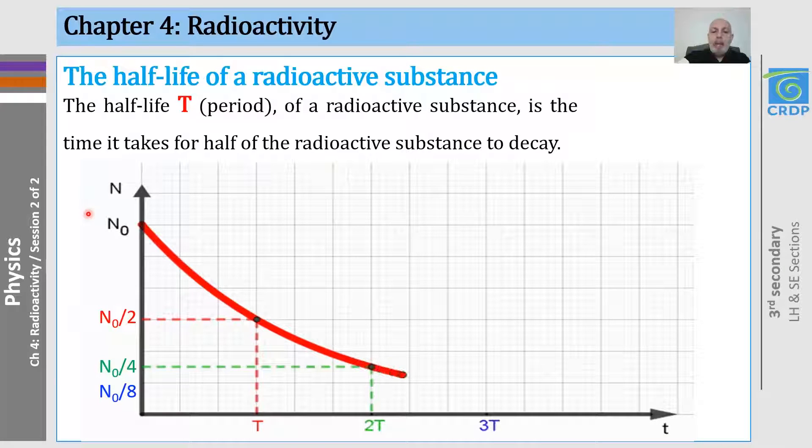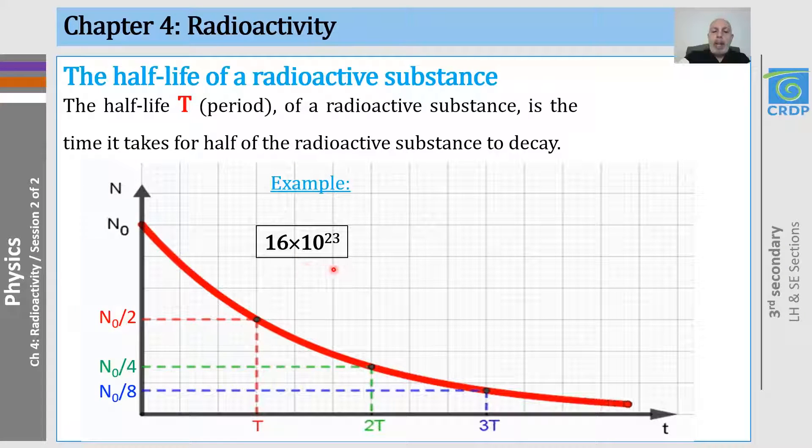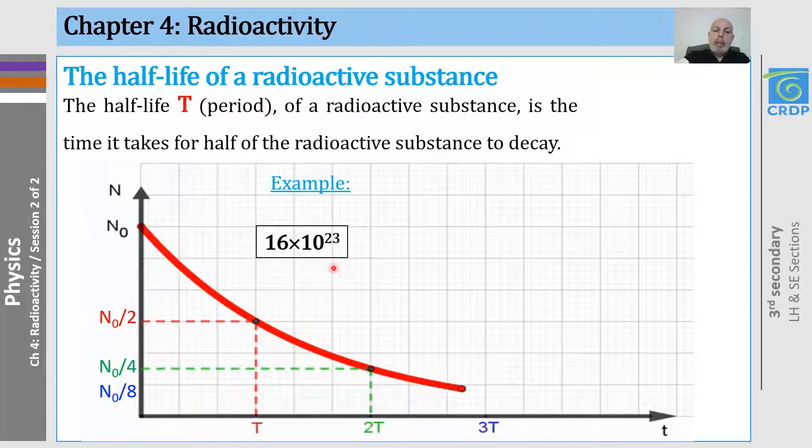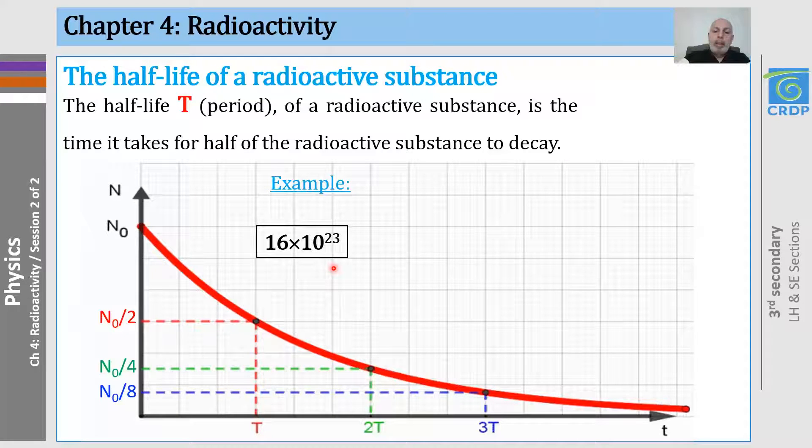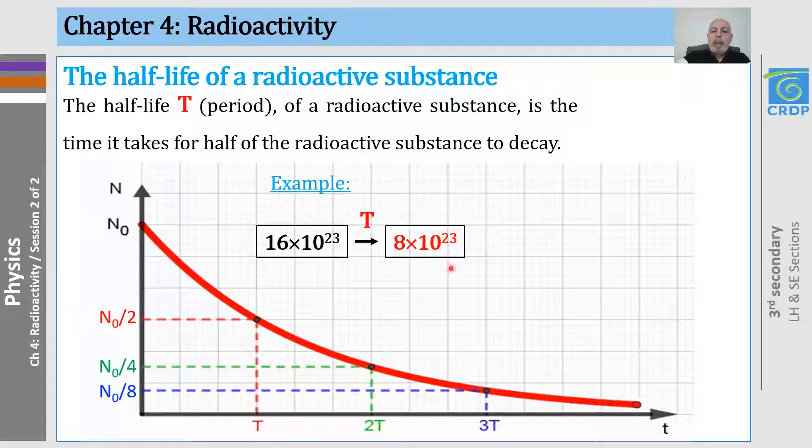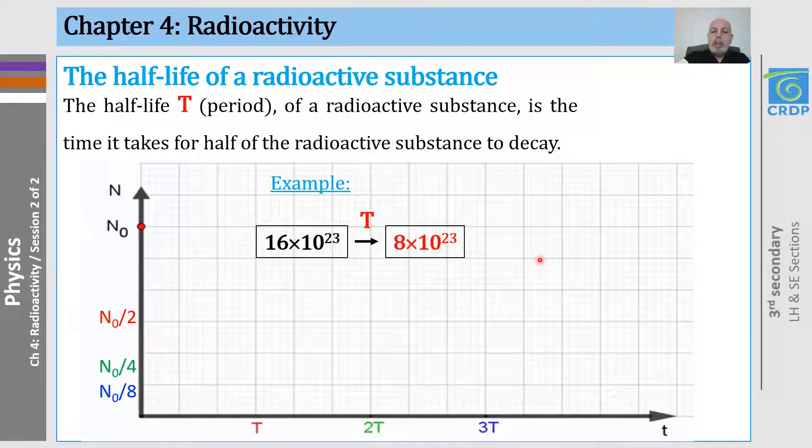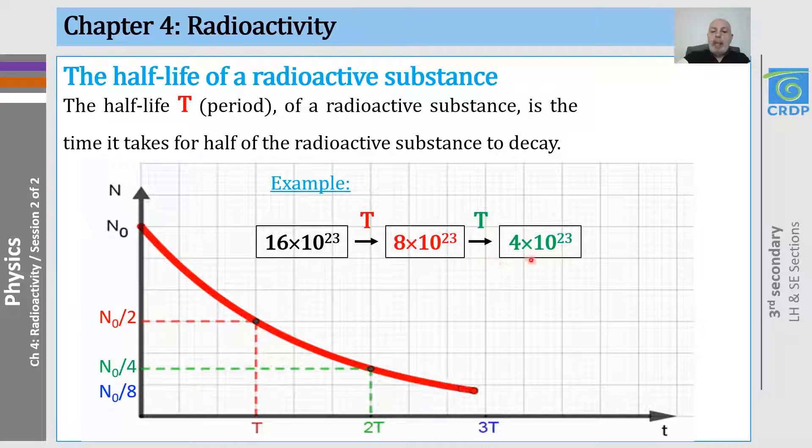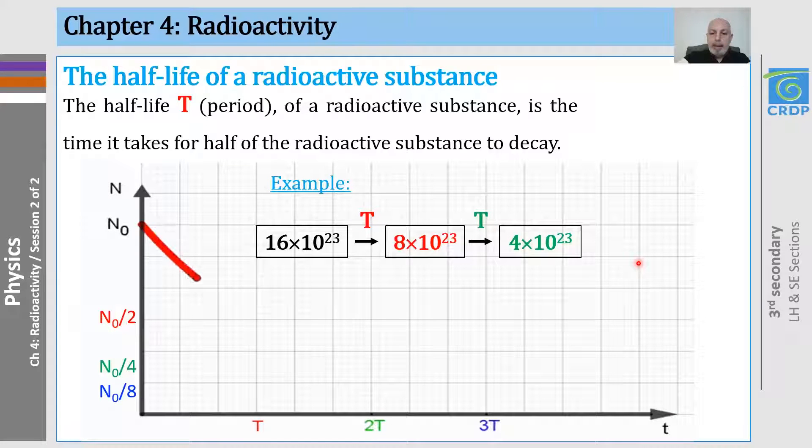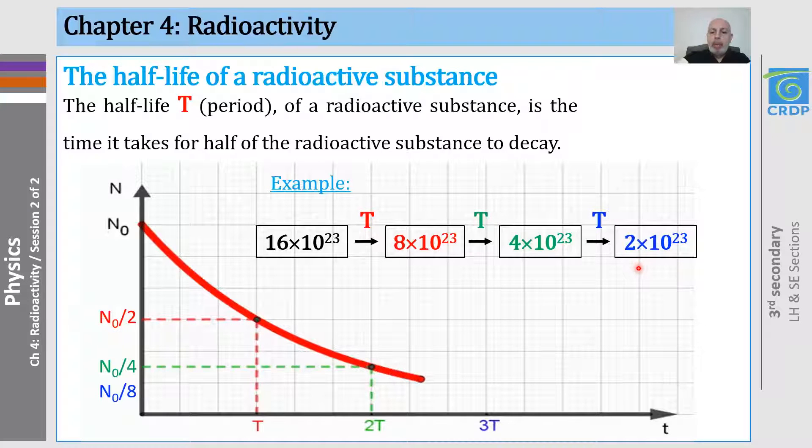Let me give you an example about a sample containing 16 times 10 to the 23 radioactive nuclei. What do you think the remaining number of radioactive nuclei will be after one period? After one period or one half-life, it will be divided by two. Then, what do you think it will become after another period? After another period, it will be divided by two also. And what do you think it will become after a third period? It will also be divided by two, and so on.